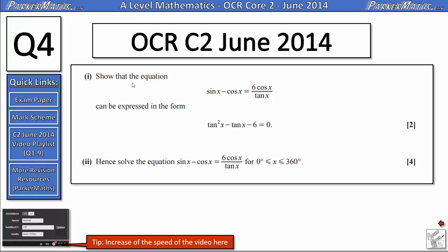In part 1 we need to show that the equation sin x - cos x = (6 cos x)/(tan x) can be expressed in the form tan²x - tan x - 6 = 0. In part 2 we need to solve that equation giving solutions between 0 and 360 degrees.